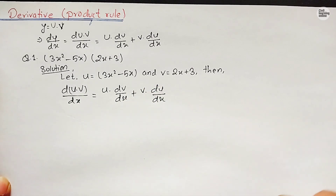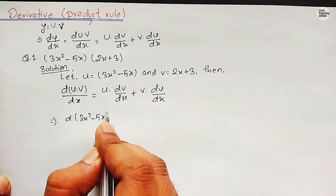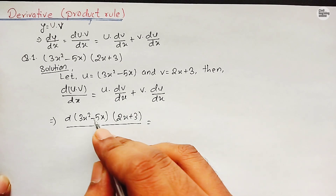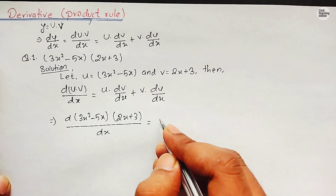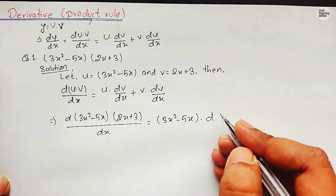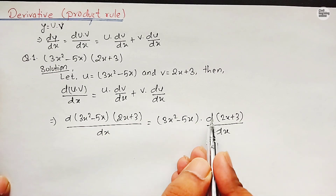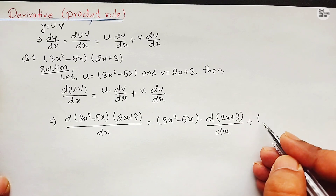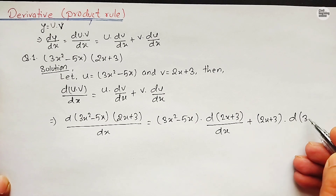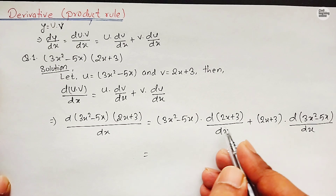Therefore, the derivative of (3x² - 5x)(2x + 3) with respect to x will be: in place of u we put 3x² - 5x, times derivative of v — which is 2x + 3 — upon dx, plus v which is 2x + 3, times the derivative of u which is 3x² - 5x, divided by dx.